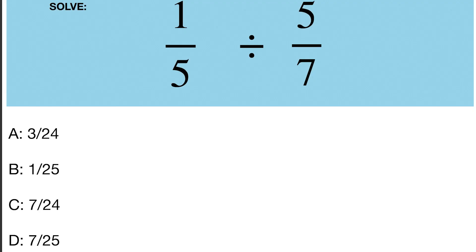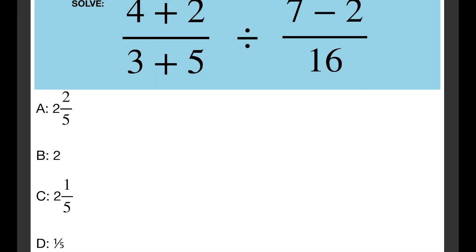7 over 16 divided by 7 over 16. 1 over 5 divided by 5 over 7. 4 plus 2 over 3 plus 5 divided by 7 minus 2 over 16.